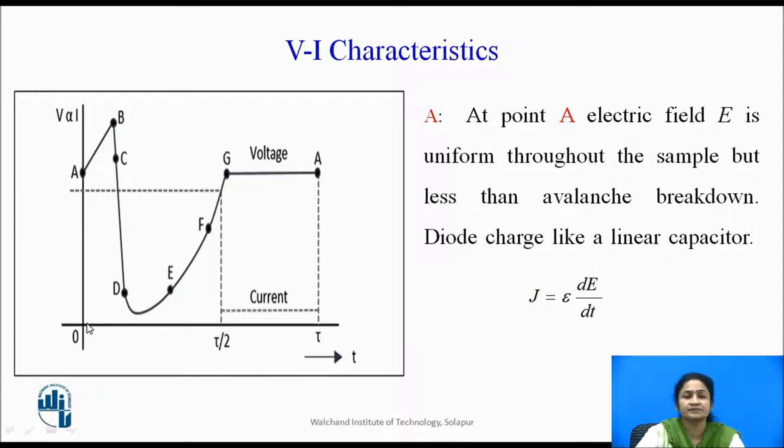On the y-axis, it is representing voltage and current. On the x-axis, it is representing the time duration. Here, the graph is being represented with dots and solid lines. The solid lines are representing the voltage, while these dots are representing the current.